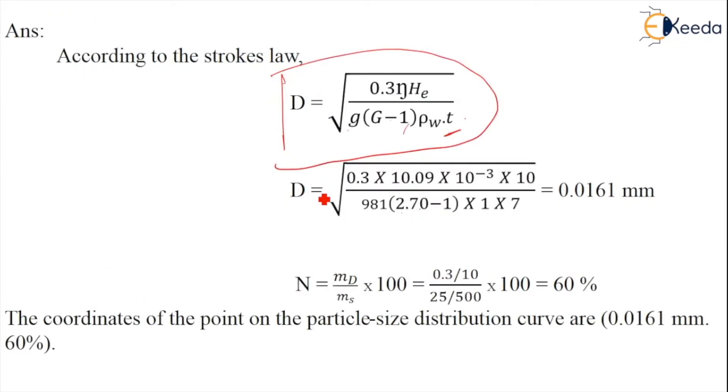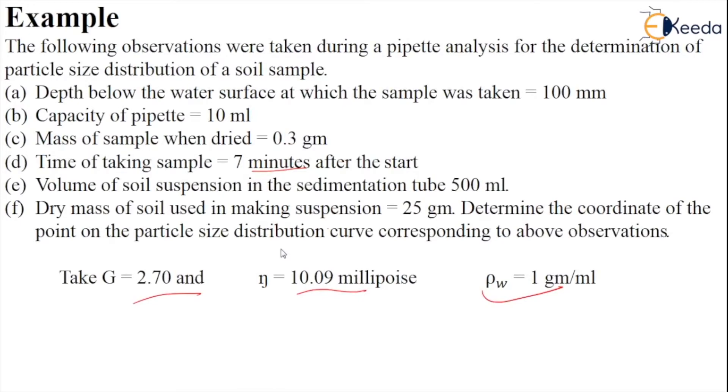After calculation, we get D equals 0.0161 mm. They also asked to calculate the point or coordinate at which the particle size distribution curve is corresponding.